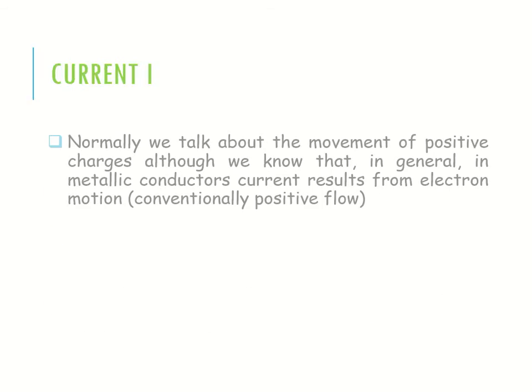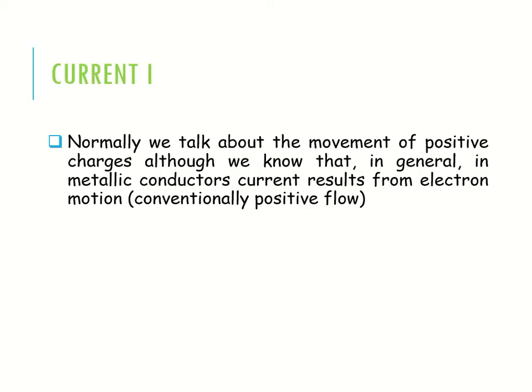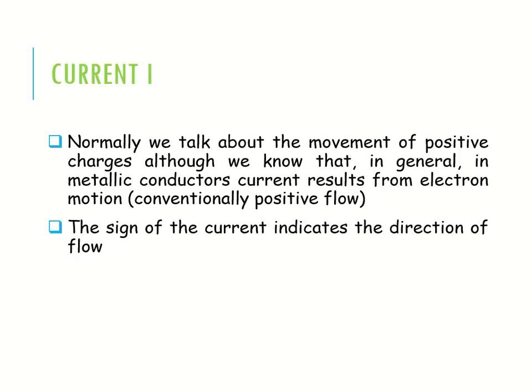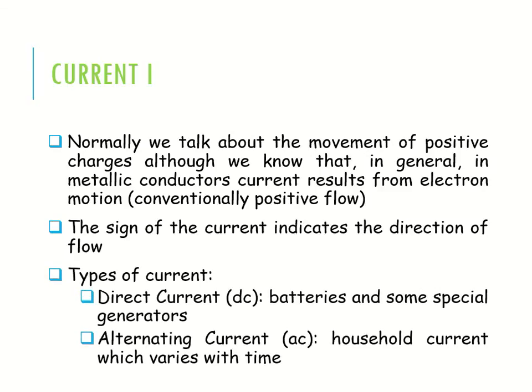Now, current — current is the movement of positive charge. In metallic conductors, current results from electron motion, but normally we consider it as a positive flow. The sign of current indicates the direction of flow.